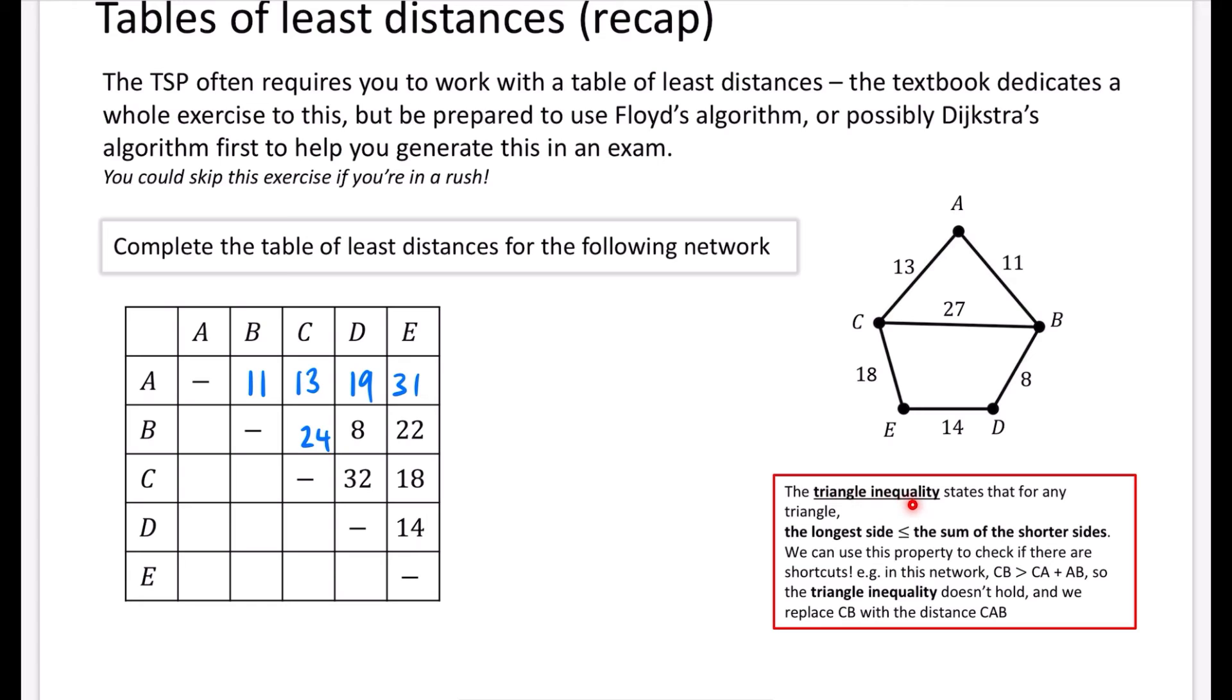But we can obviously do them on networks anyway. So I've said here that the triangle inequality states that for any triangle, the longest side is less than or equal to the sum of the shorter sides. And this one does not uphold the triangle inequality that we've got here. So we can use this property to check if there are any shortcuts. So in this network, CB is longer than CA plus AB. So the triangle inequality doesn't hold. And we can replace CB with the distance CAB instead.